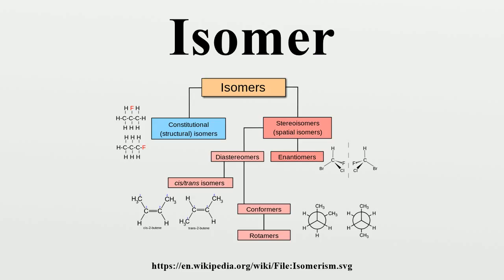This group includes chain isomerism, whereby hydrocarbon chains have variable amounts of branching; position isomerism, which deals with the position of a functional group on a chain; and functional group isomerism, in which one functional group is split up into different ones. For example, two position isomers would be 2-fluoropropane and 1-fluoropropane, illustrated on the left side of the diagram above.